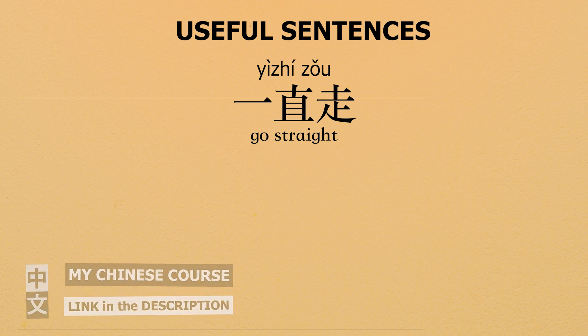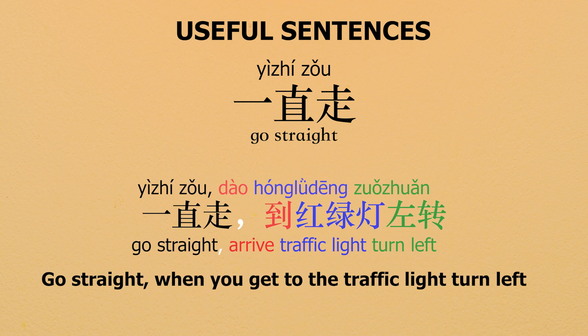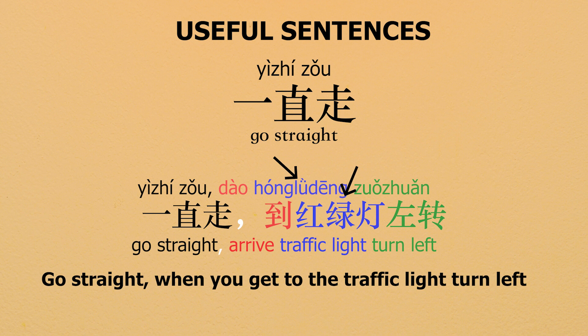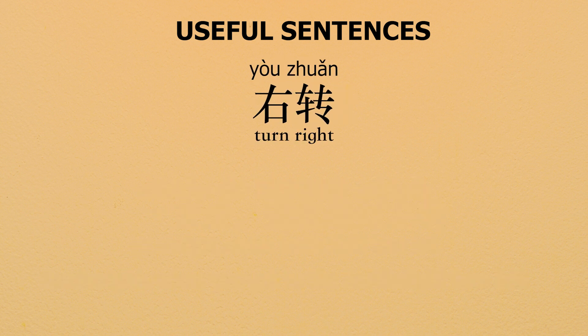一直走 means go straight. 到红绿灯左转 — 一直走 means to go straight. 到 means to arrive, it's a verb. 红绿灯 — be careful, 绿 must be read as 绿 not 路, so 红绿灯 means traffic light. 左转 means turn left. So: go straight, arrive at the traffic light, and turn left. We also have 右转, which means turn right.